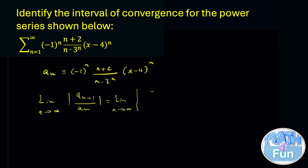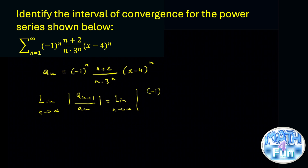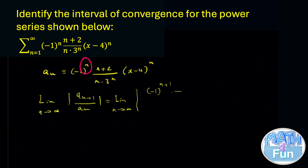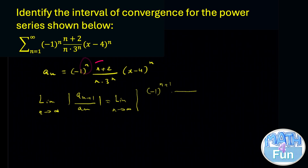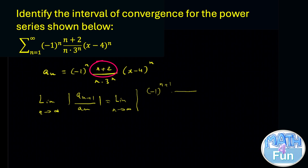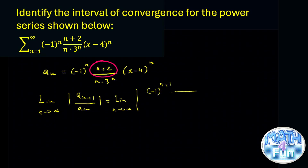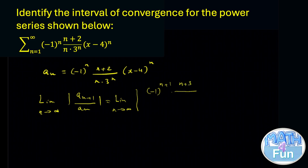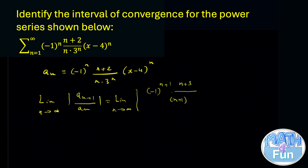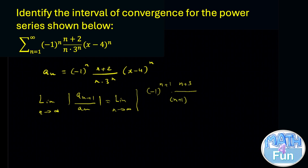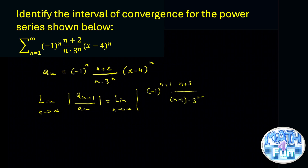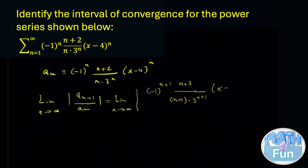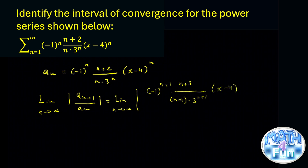We write the limit as n approaches infinity of the absolute value. Now a_{n+1} is represented by minus 1 to the power n plus 1, multiplied by n plus 3 (since n becomes n+1), over n plus 1, times 3 to the power n plus 1, all multiplied by x minus 4 to the power n plus 1.